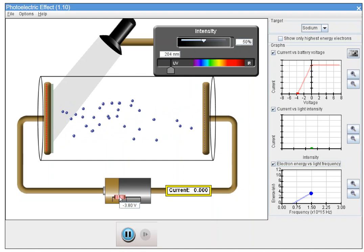And when the potential becomes minus 3.8, current becomes zero. This potential is called stopping potential. So stopping potential means that electrons no longer pass through the gap, and current becomes zero.